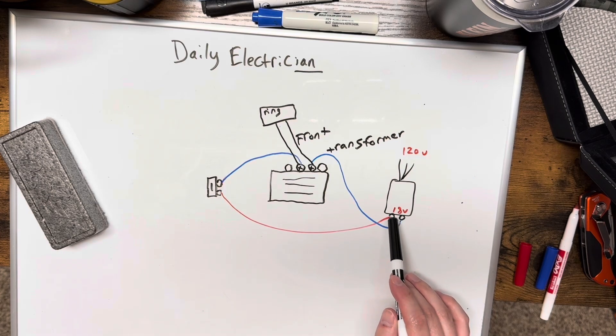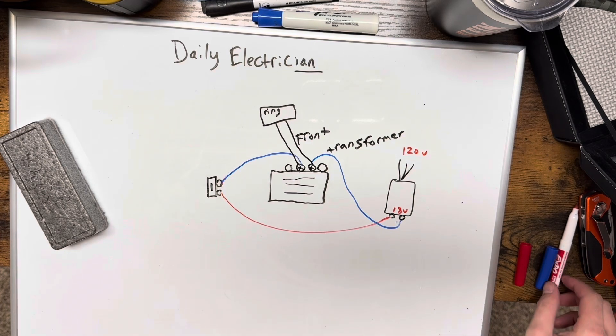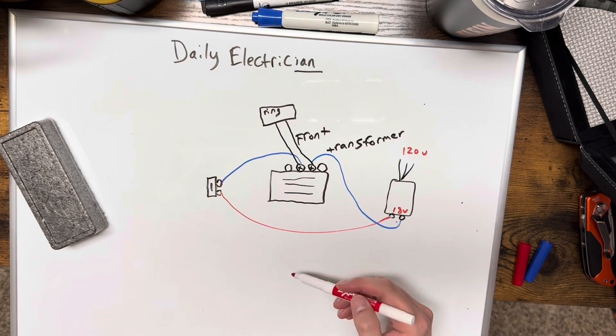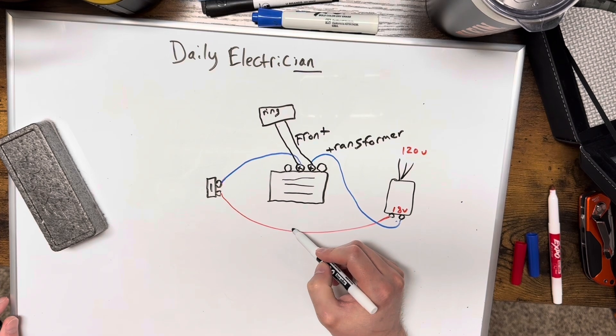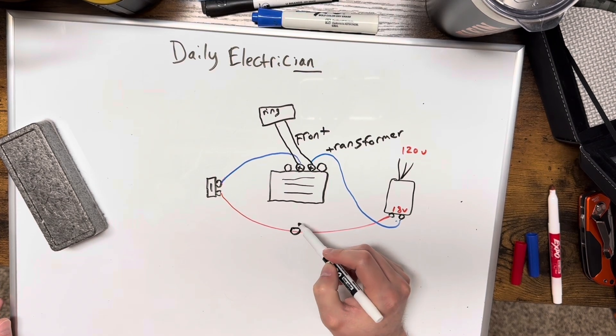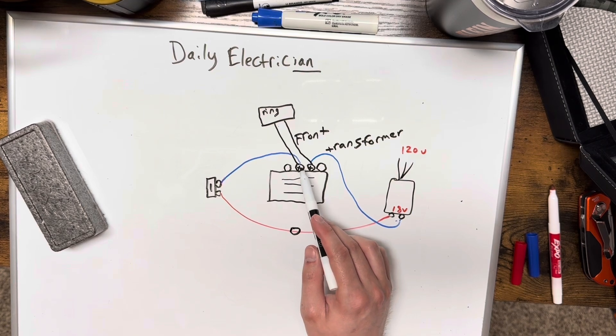If you have a junction box or anything, if you need to cut this circuit in half, you can splice this right here with a wire nut for that wire. And then when you cut the other wire, you land them on the front connection point and the transformer connection point.